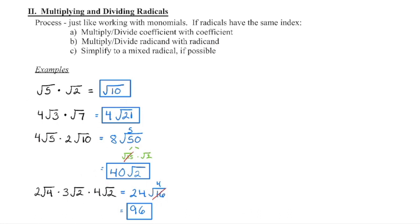4 times 2 is 8. 5 times 10 is 50 — we can pull a 25 out of there, take the square root of 25 to get 5, then 5 times 8 is 40, and we're left with the 2 in the radicand.